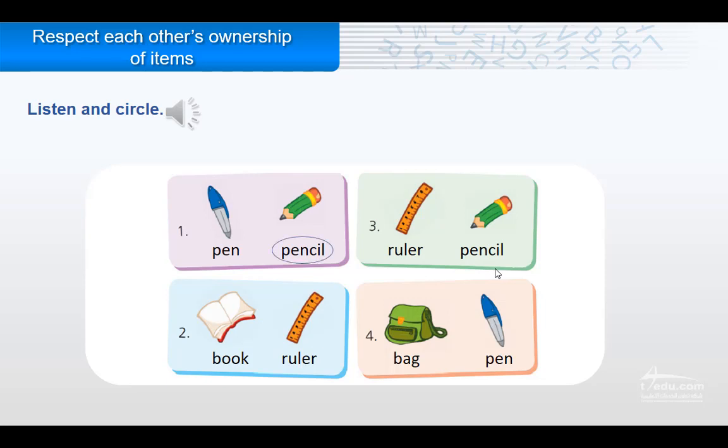Two. What's this? It's a book. Three. What's this? It's a ruler. Four.